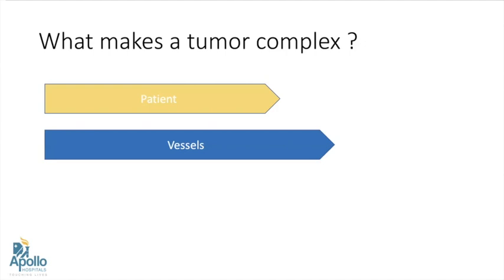The second factor is vessels. The vascular anatomy plays a very key role especially in partial nephrectomy, and detailed vascular anatomy is essential to do any form of partial nephrectomy. Multiple vessels, early branching, all this can pose problems in dissection, and thick lymphatics around the vessels can also pose a problem. Atherosclerotic vessels can result in difficult clamping and add to the complexity of the surgery.